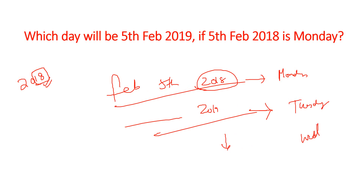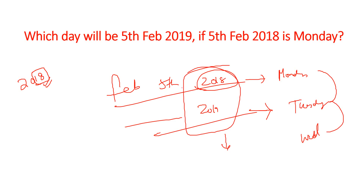The year after that becomes Wednesday. So one day gets added each time when it is not a leap year — that needs to be clearly checked. So with additional problems we'll cover this further at the end. Next question.